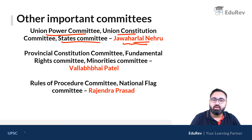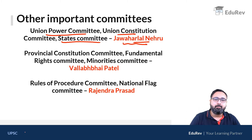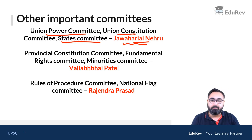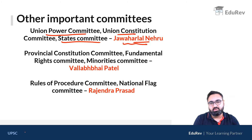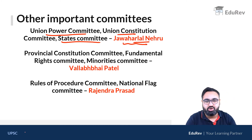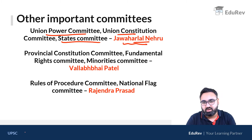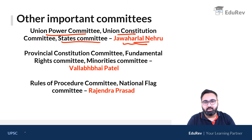Vallabhbhai Patel himself had multiple committees to look after: the provincial constitution committee, the fundamental rights committee, and the minorities committee. The reason he was put in charge of these was that when he was the Congress president earlier, there was some resolution introduced about fundamental rights and minorities, so he was given charge of these committees. India's first president and the president of the Constituent Assembly, Dr. Rajendra Prasad, was given charge of the rules of procedure committee and the national flag committee.